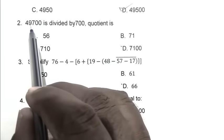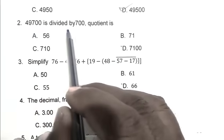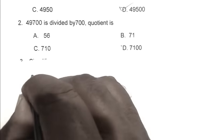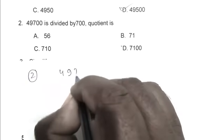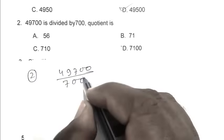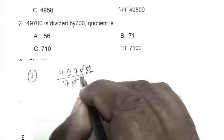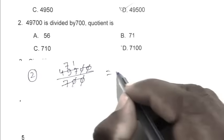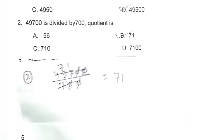Question number two: 49,700 is divided by 700, quotient is? So 49,700 divided by 700. 7 into 49 is 7 times 1, so answer is 71. B is the right answer.